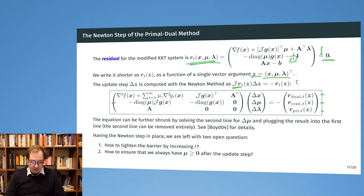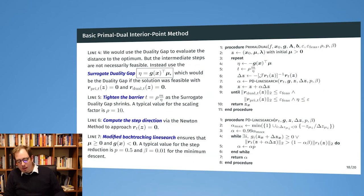The second question is how to ensure that we always have this mu greater than or equal to zero, because this is also one of the requirements of the KKT system and this is not included in the residual term. This is something that we have to think about separately. The way this is done is in the primal-dual algorithm, and the important things are the steps that are repeated between line three and line nine.